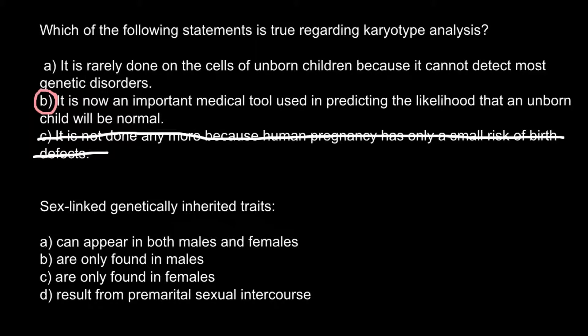The next question: sex-linked genetically inherited traits. There are four statements to choose from: A — can appear in both males and females; B — are only found in males; C — are only found in females; D — result from premature sexual intercourse. We can cross out answer D right away — this is just given here for fun, and I don't think anyone would choose this answer.